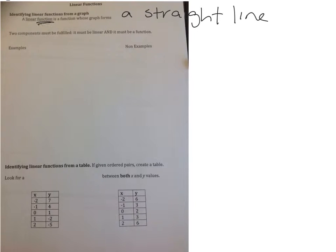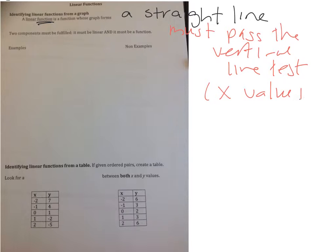We also have to think about the definition of a function. The line must be straight and must pass the vertical line test, so the x values cannot repeat. Two components must be fulfilled for it to be a linear function: it has to be linear, and it has to be a function.